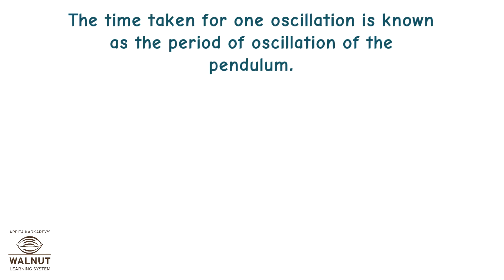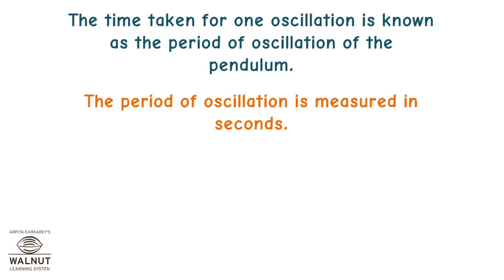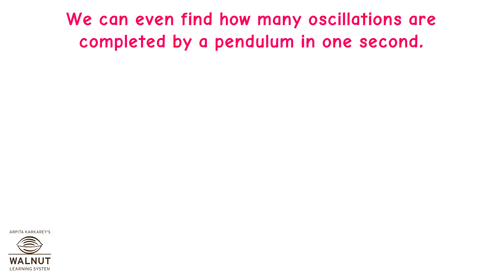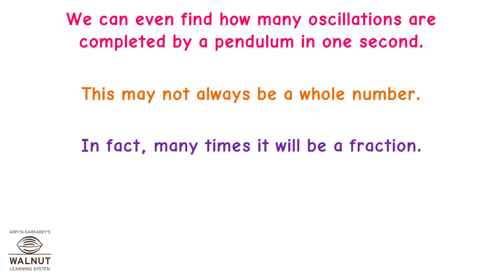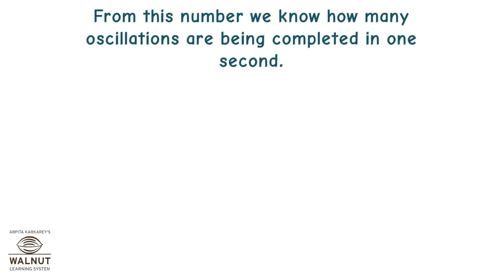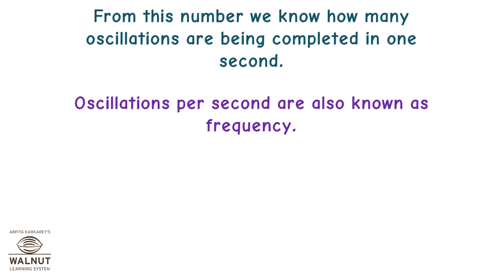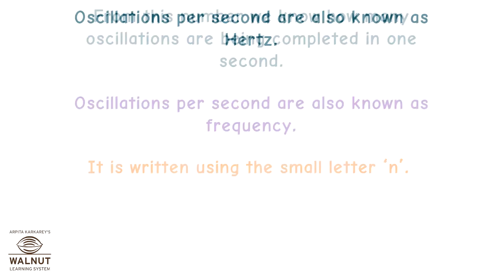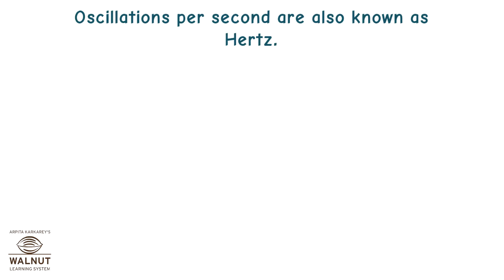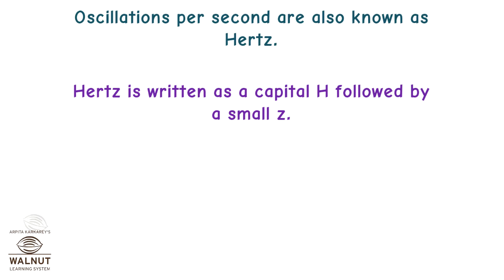The time taken for one oscillation is known as the period of oscillation of the pendulum, and it is measured in seconds. We can find how many oscillations are completed by a pendulum in one second. This may not always be a whole number — many times it will be a fraction. From this number we know how many oscillations are being completed in one second. Oscillations per second are also known as frequency, written using the small letter N. Oscillations per second are also known as Hertz, written as a capital H followed by a small Z — Hz is the short form for Hertz.